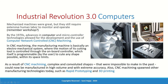The third industrial revolution started by the 1970s. Although mechanization really reduced the amount of human labor, it was still very limited in what it could do and still required extensive human labor to monitor and operate. With the development of computer technology, microprocessors, and microcontrollers, the concept of computer numerical control machining — CNC machining — was introduced.